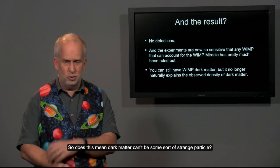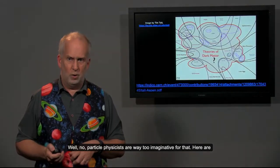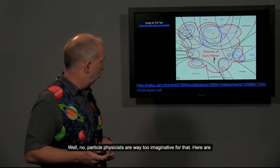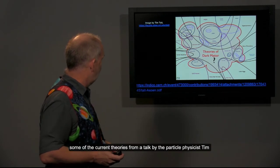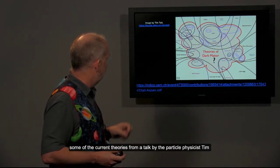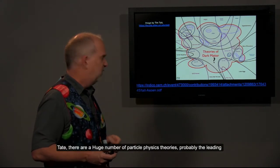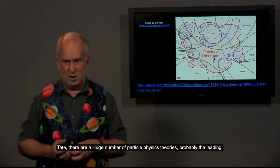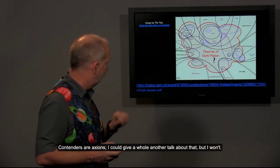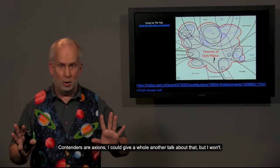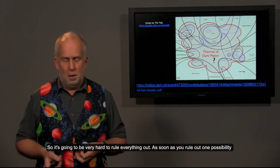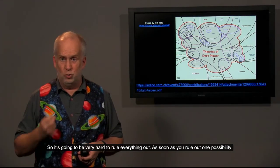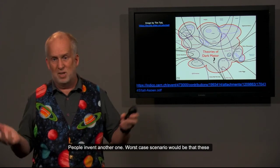So does this mean dark matter can't be some sort of strange particle? Well, no. Particle physicists are way too imaginative for that. Here are some of the current theories from a talk by particle physicist Tim Tait. There are a huge number of particle physics theories. Probably the leading contender now is axions. I can give a whole other talk about that, but I won't. So it's going to be very hard to rule everything out. As soon as you rule out one possibility, people will invent another one.